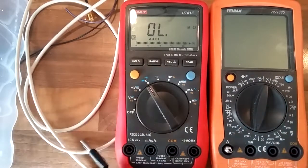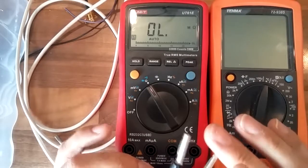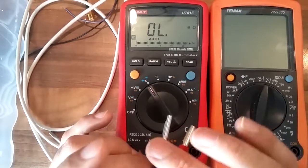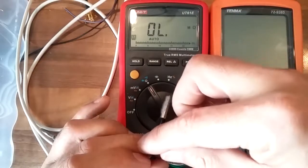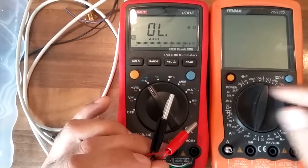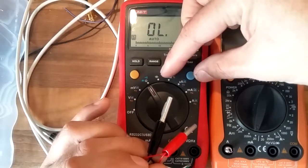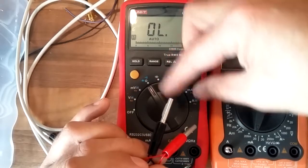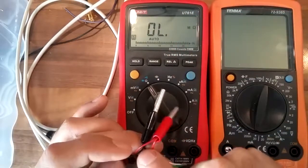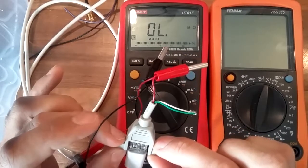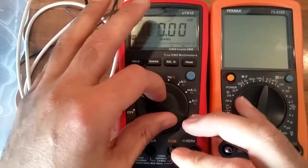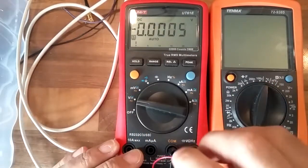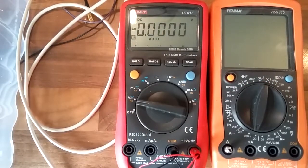The way that the precision multimeter does a four-wire measurement is it feeds a preset current through the resistance you're trying to measure, and then measures the voltage across that resistance. Rather than measuring the voltage dropped across the internals of the multimeter, you measure the voltage as close to the device under test as you can.